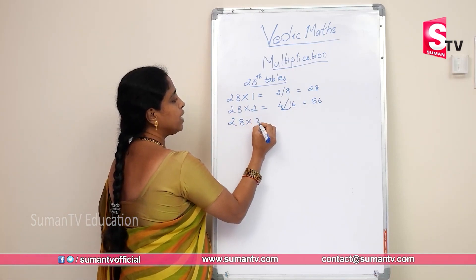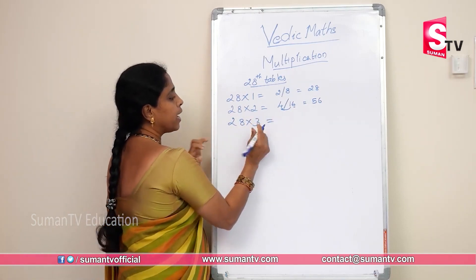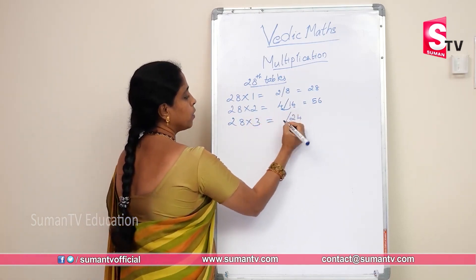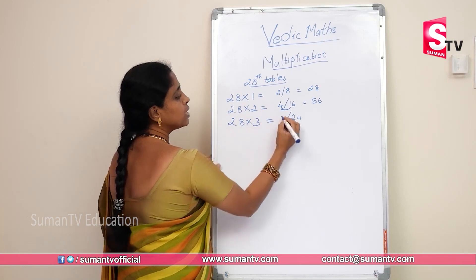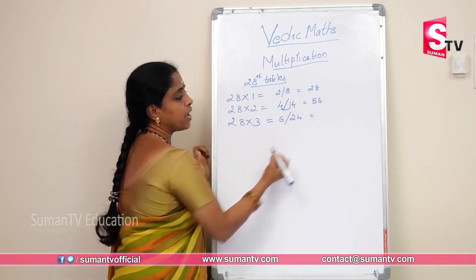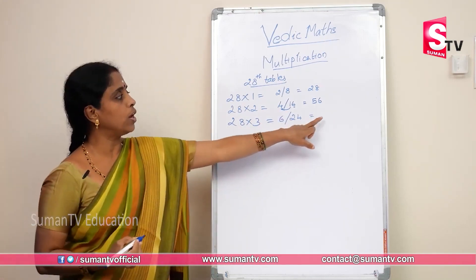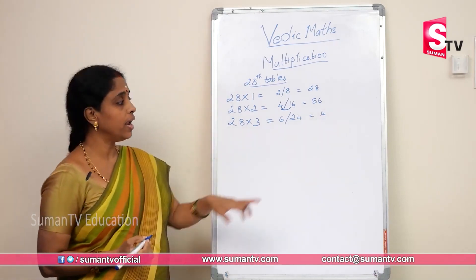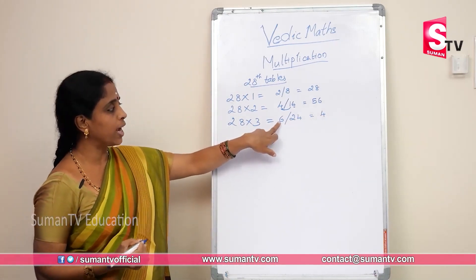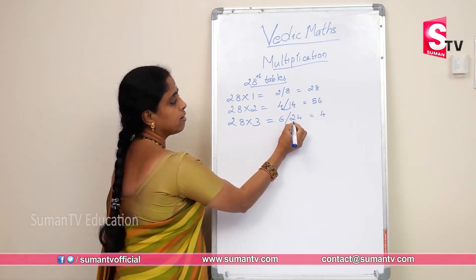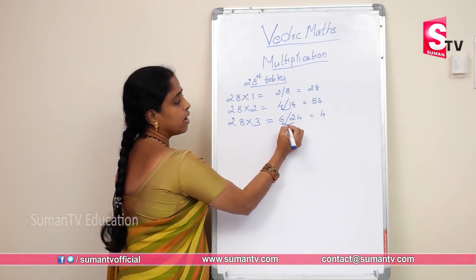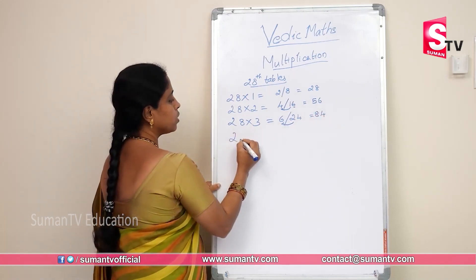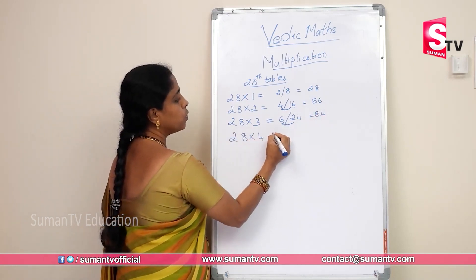Next, 28 × 3. 8 threes are 24. 3 twos are 6. Carry the 2. In the unit place keep 4. Add the carry to the next digit: 6 plus 2 is 8. So 28 × 3 is 84.